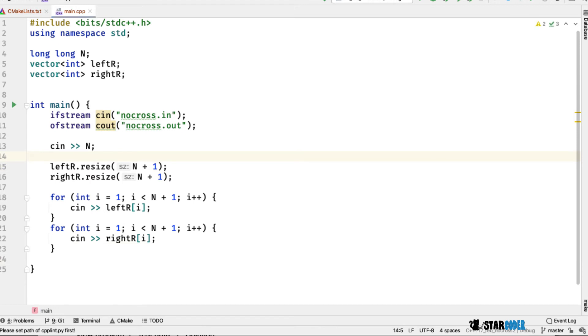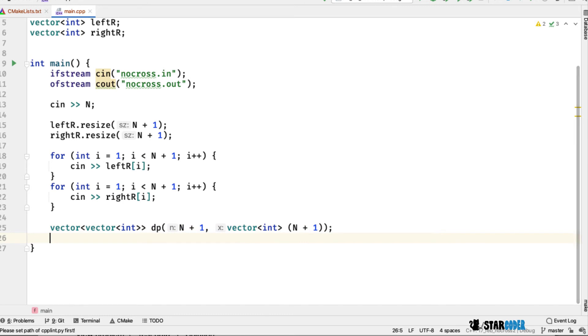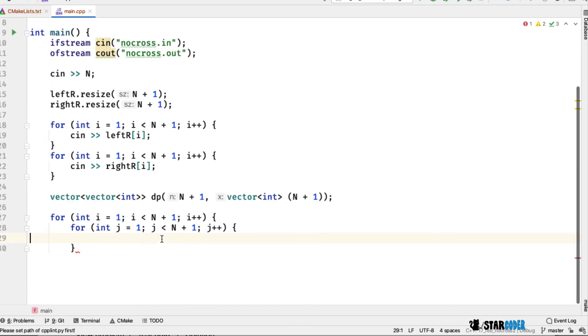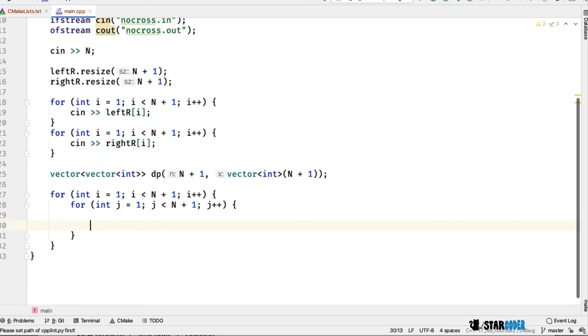Then we're going to create our DP. We're going to have a 2D DP of n+1 by n+1 and we're going to loop through both i and j. The main thing we're going to check is whether or not they're friendly.